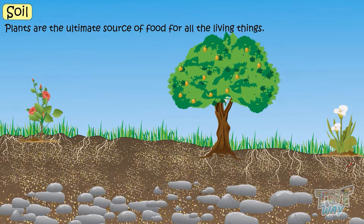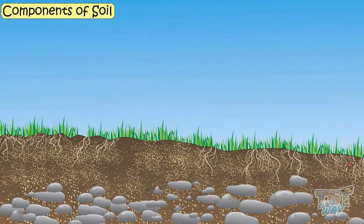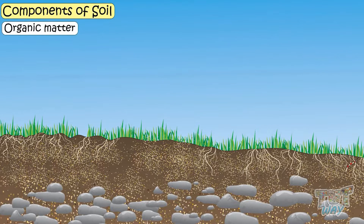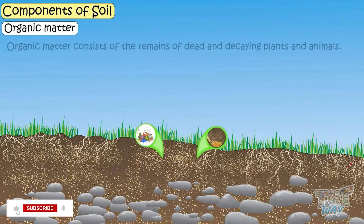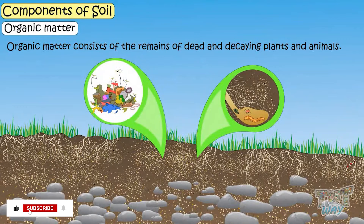Now let's learn the components of soil. First is organic matter. It is dead and decaying plant and animal remains.